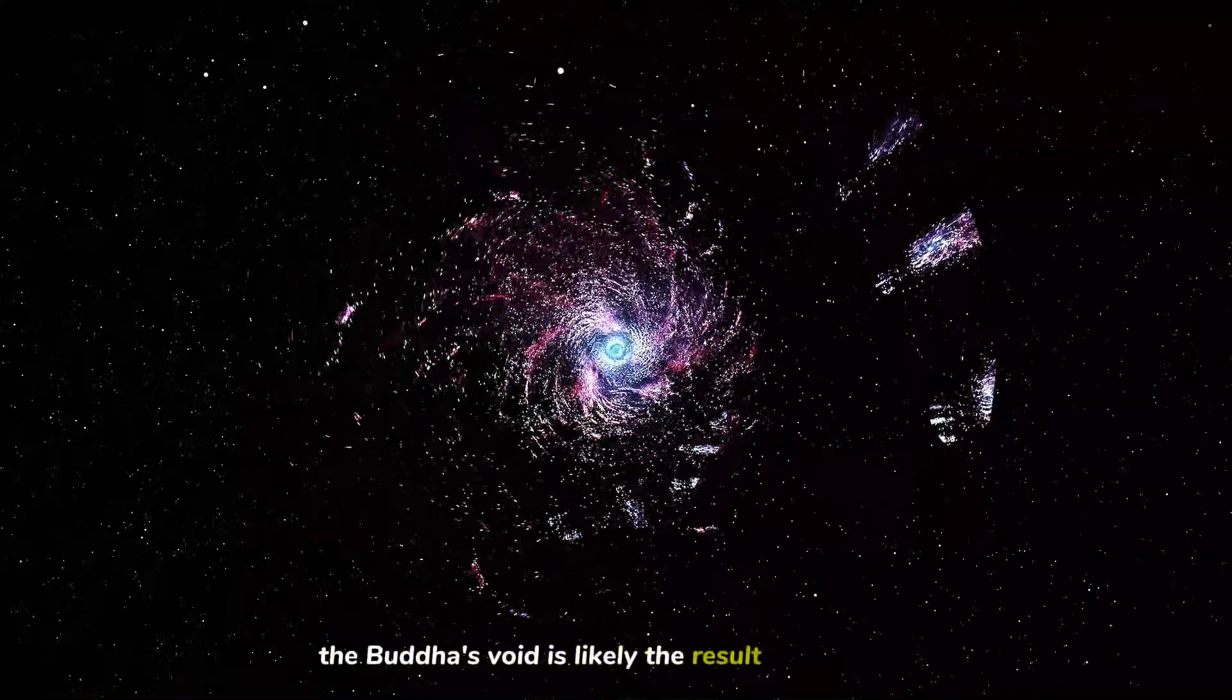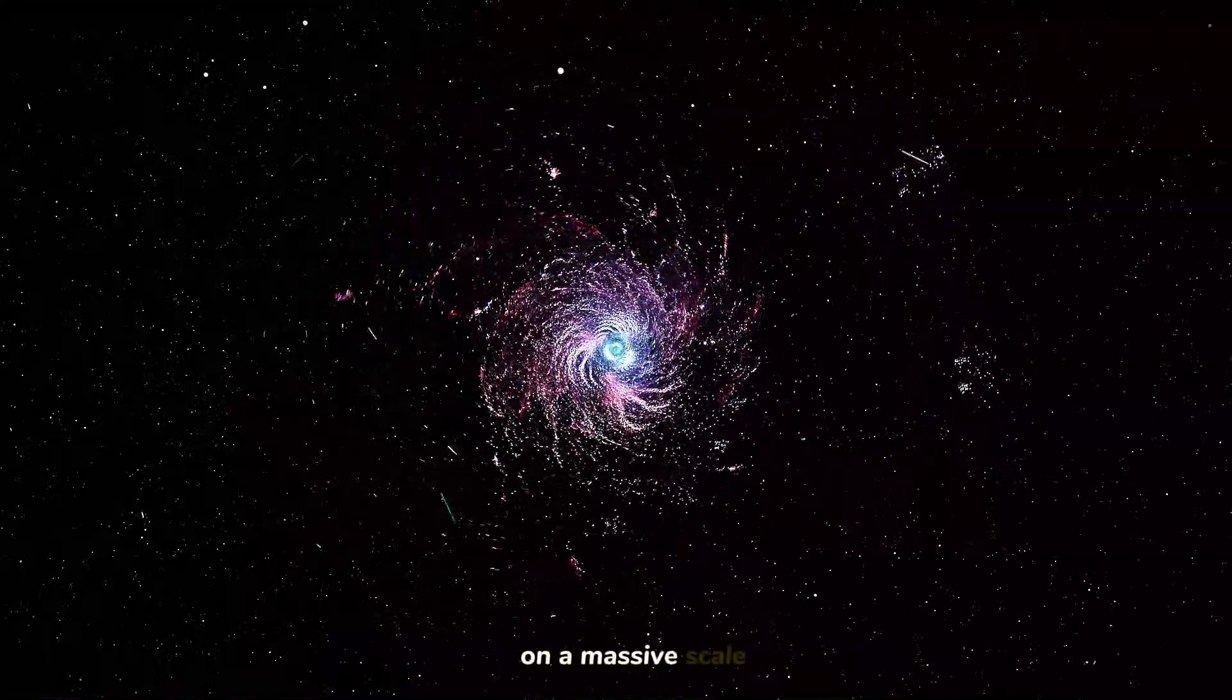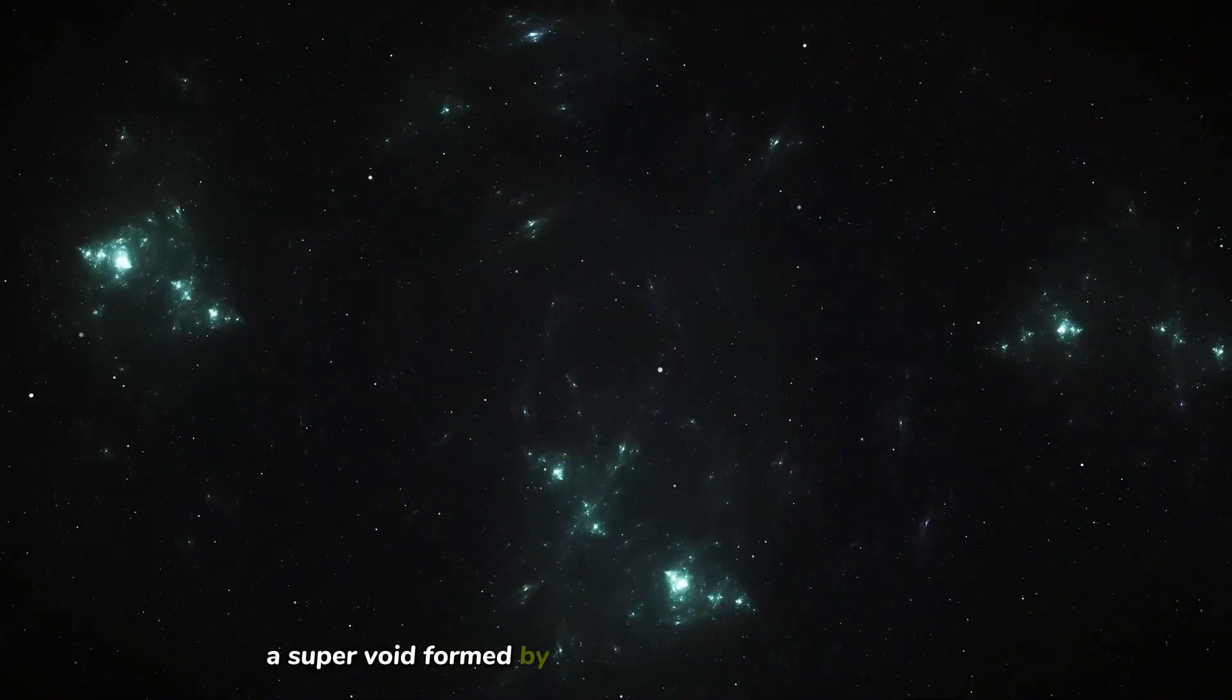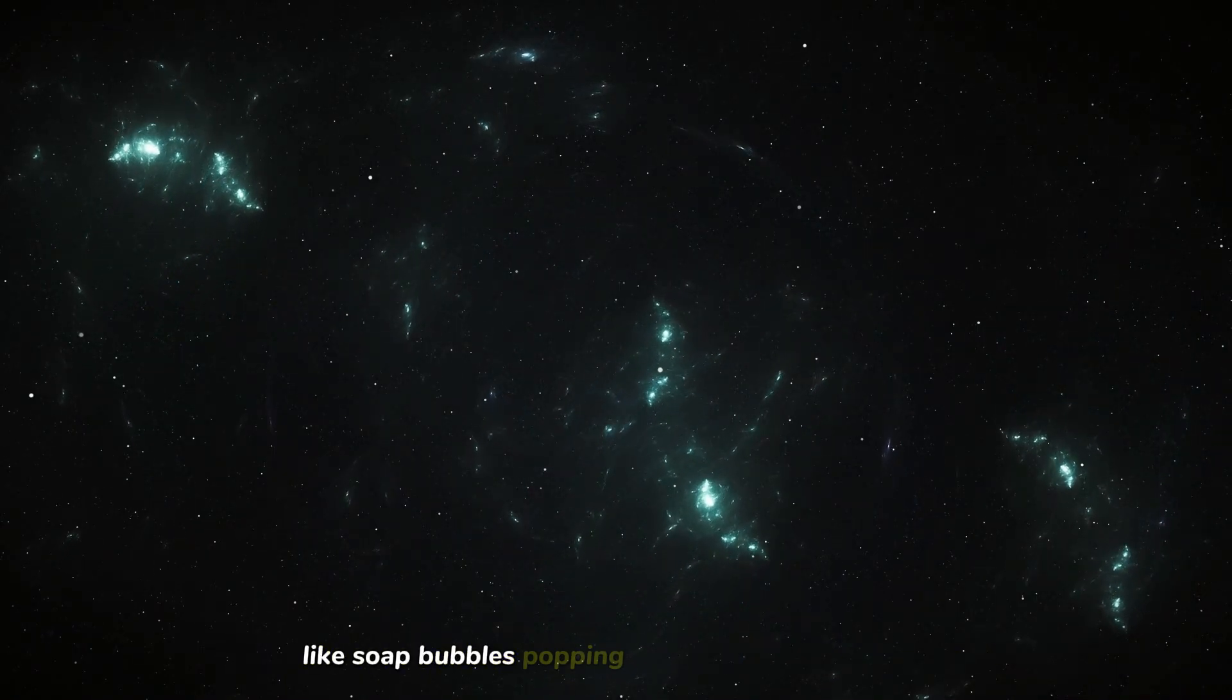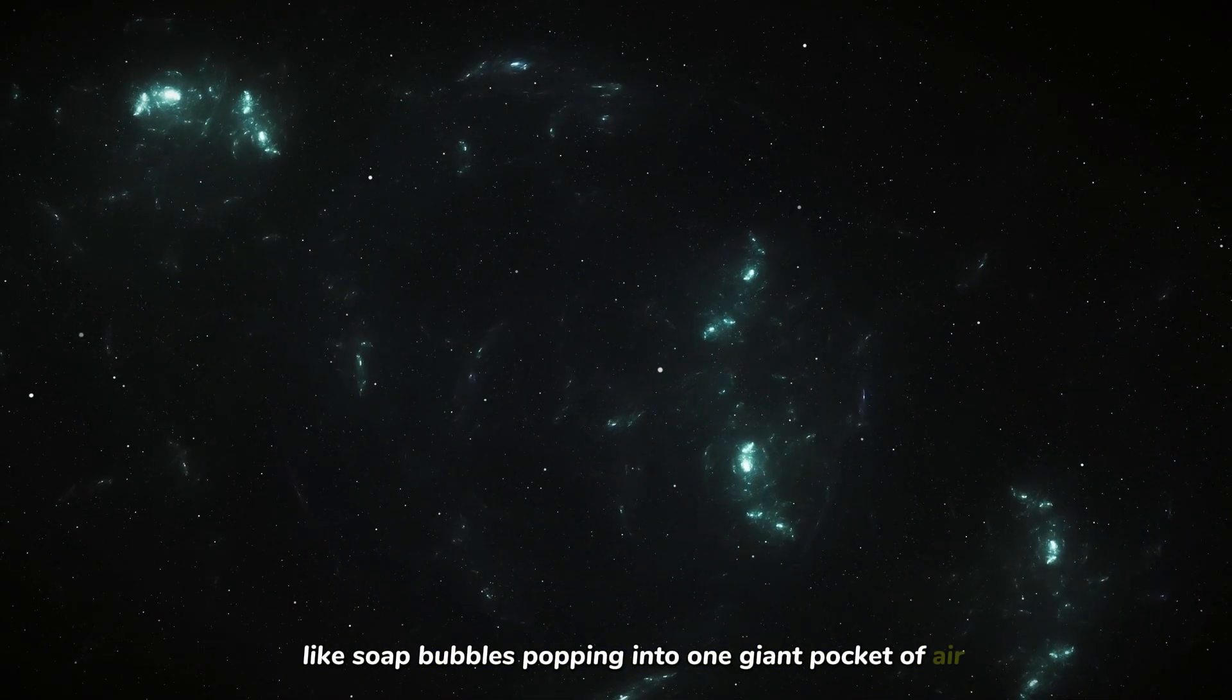Smaller bubbles merge together to form larger ones. The Boötes Void is likely the result of this process on a massive scale, a super void formed by the merging of several smaller voids, like soap bubbles popping into one giant pocket of air.